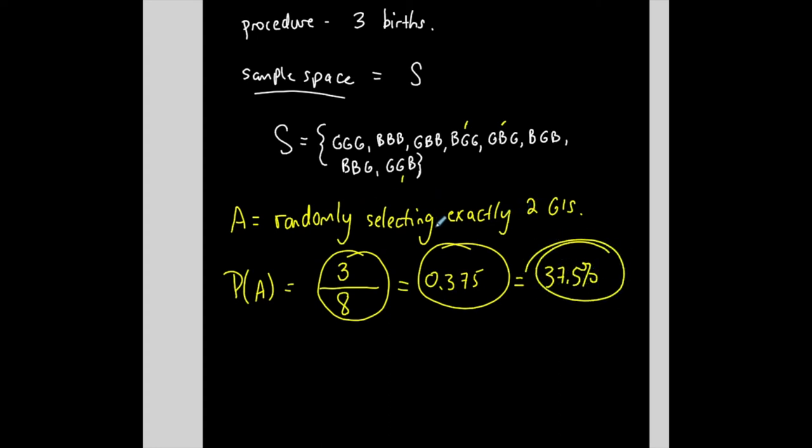If that was my procedure, and each birth is only a boy or a girl, there's a 37.5% chance of me getting two girls, whatever order, they can come first or last or whatever. But 37.5% chance of that happening. So you can see that probability can be represented as a fraction, as a decimal, or as a percentage.